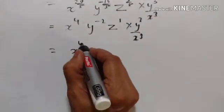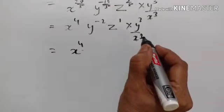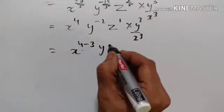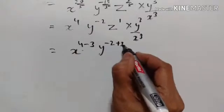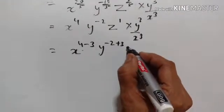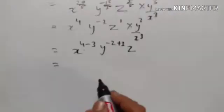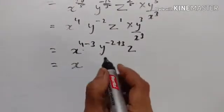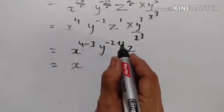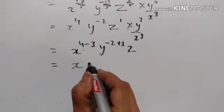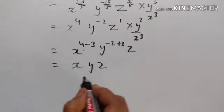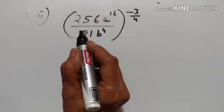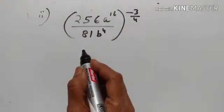x raised to the power of 4 minus 3, y raised to the power of minus 2 plus 3, and z raised to the power of 1 — that is x, y raised to the power of 3 minus 2 is equal to 1. So y and z: x, y, z is the answer.